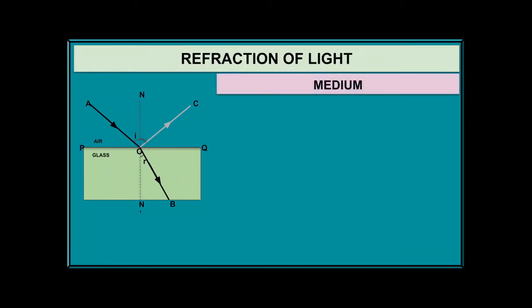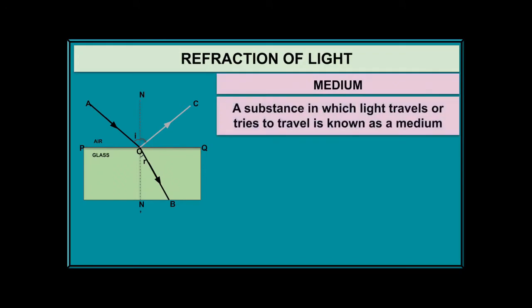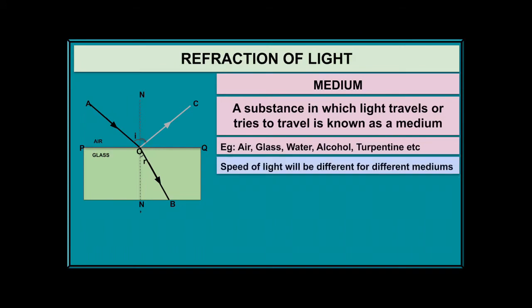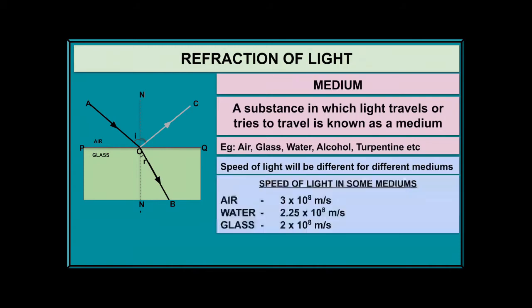Here, air and glass are both transparent mediums. A substance in which light travels is called a medium. Light can travel through air, glass, water, alcohol, turpentine, and many other substances — all those things through which light travels are known as a medium. An important point to remember is that the speed of light is different in different mediums.